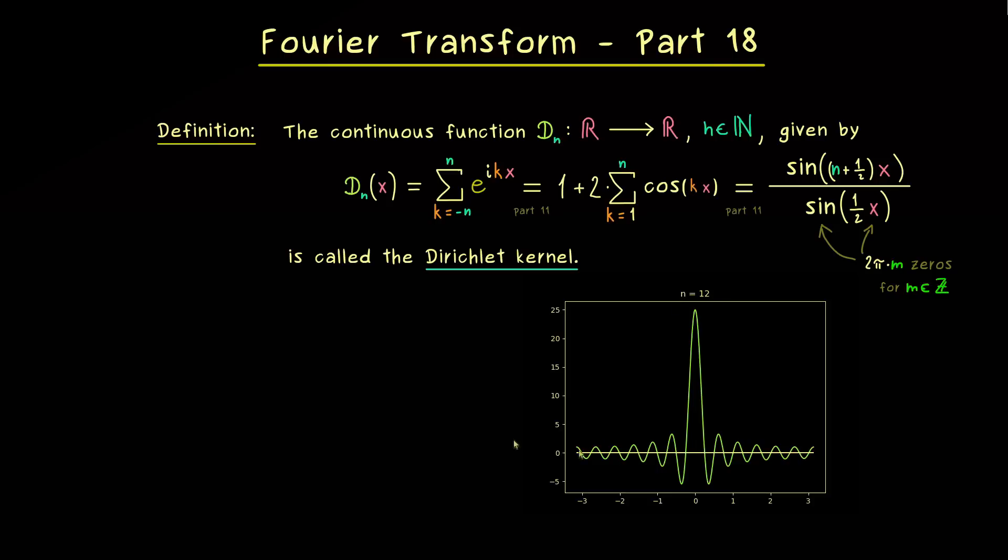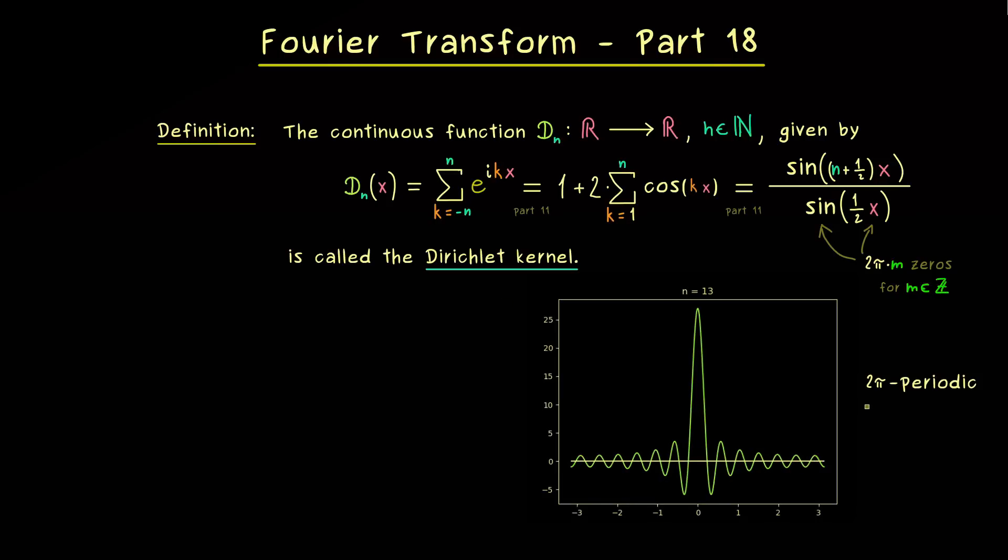This behavior is quite obvious if you look at the first or the second representation, because there you see, at the origin, we will just add up ones. So in particular, if we send n to infinity, we don't have pointwise convergence of this sequence of functions at all. But still, the whole Dirichlet kernel is very helpful for representing Fourier series.